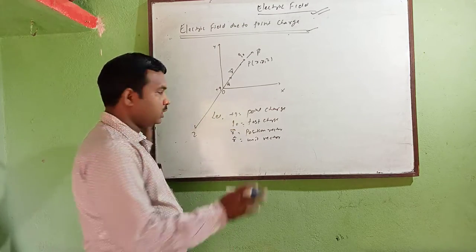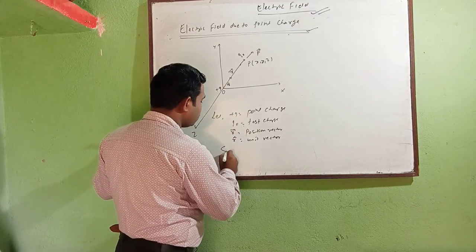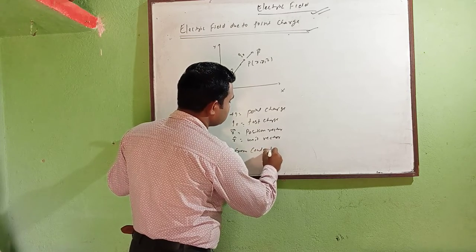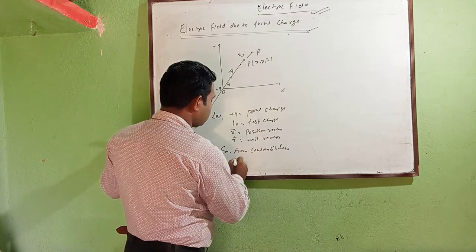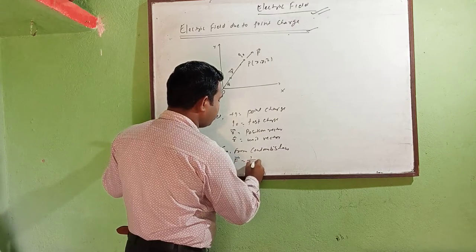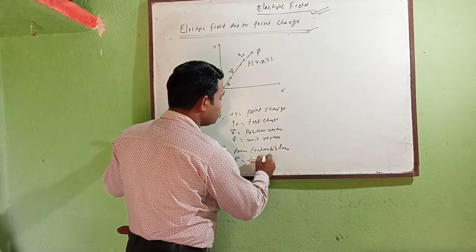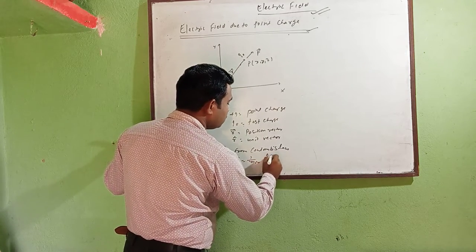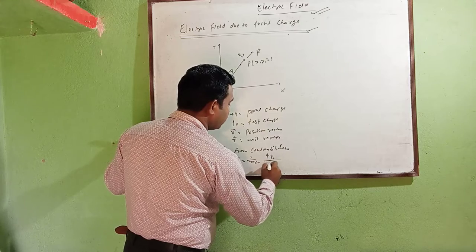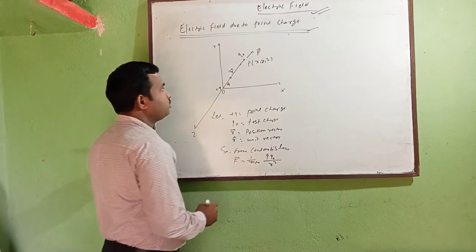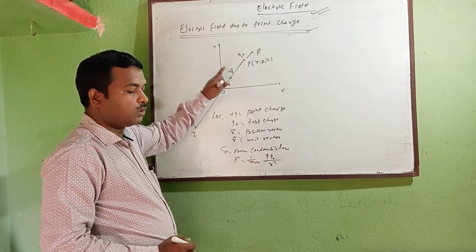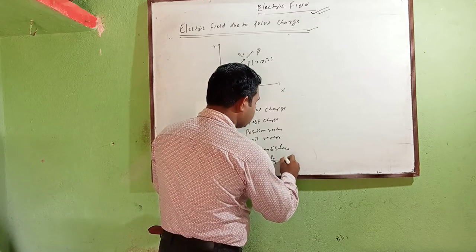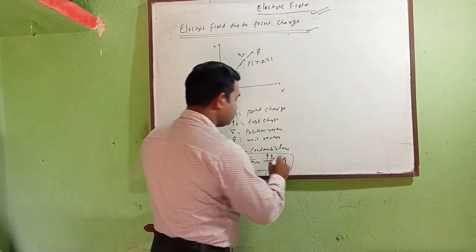Cap r — the unit vector — is the unit vector in the direction of r. From Coulomb's law, the force is: F = (1/4πε₀) · (q · q₀ / r²) · r̂, where r̂ is the unit vector.